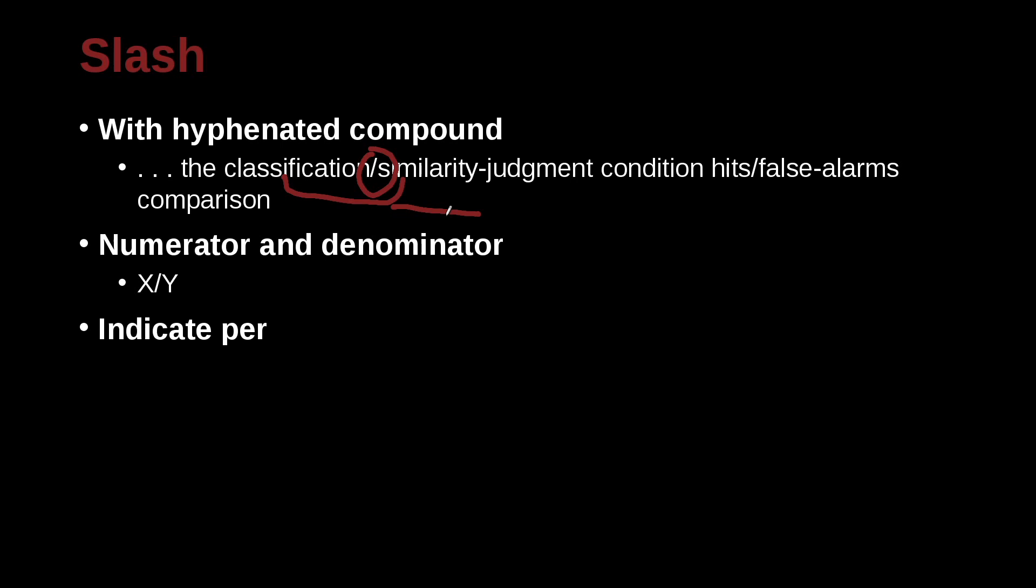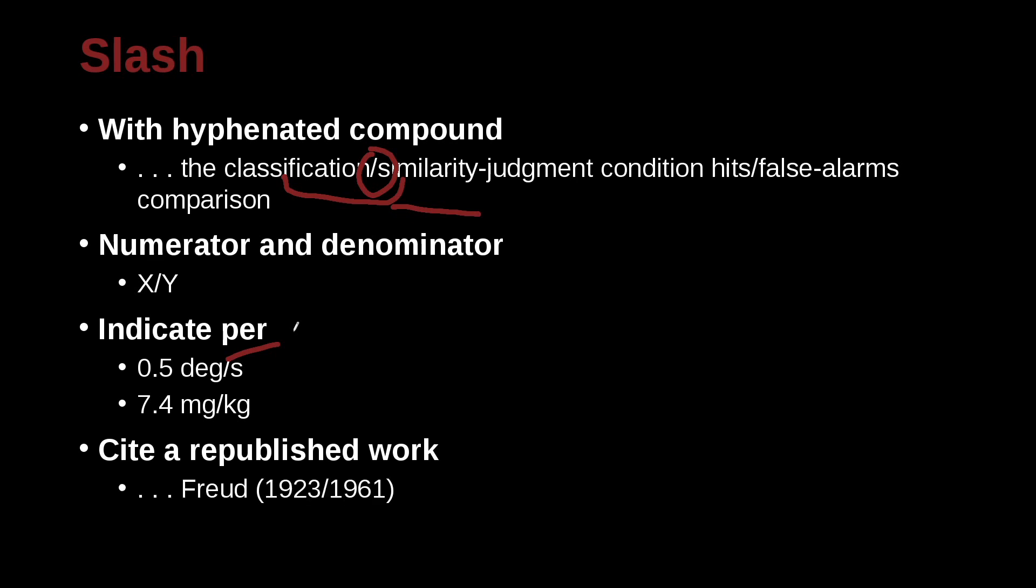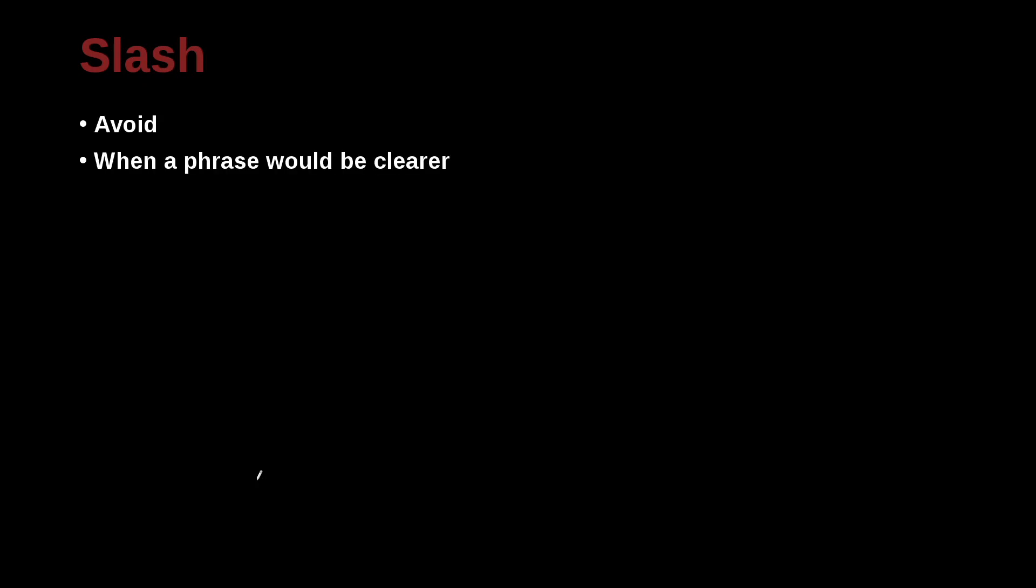Of course, numerator and denominator we often use in math. Very simple. And of course, for the per idea. So here, 0.5 degrees per second. So this every second. Every kilogram. And also you use this when you want to cite republished work. So if you have somebody's book or somebody's, well, usually this would be a book for republishing. And the book may have multiple publishing dates. So maybe it was published in 1923, but it was also published in 1961. Published again, republished. You can use the slash. No space before, no space after.